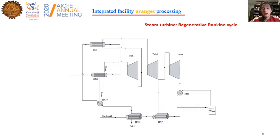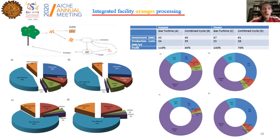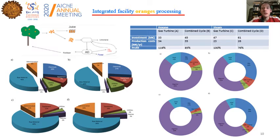The hot flue gas can either be used to heat up the different stages and units that require energy, or alternatively we can use it within a combined cycle — using it to produce steam and with that steam generate additional power in a regenerative Rankine cycle with reheating. We therefore have four different alternatives: hexane or steam for limonene extraction, each combined with either a simple gas turbine or a combined cycle.